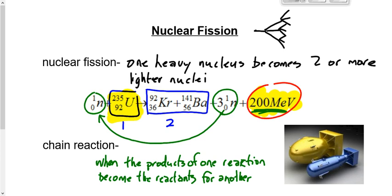There's another important term here: critical mass. In order to sustain a chain reaction, you need a certain minimum amount of fuel. When nuclear weapons are transported, they're carried at subcritical mass, so even in a serious accident with fire, there could not be a nuclear explosion. Instead of carrying 50 kilograms of uranium, you'd carry 25 and 25 separately, so the chain reaction couldn't be sustained.